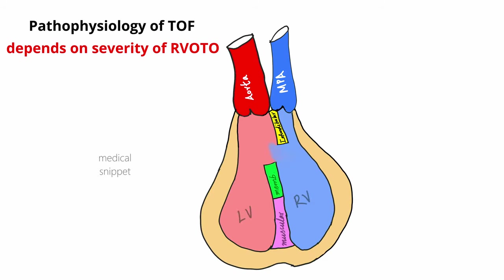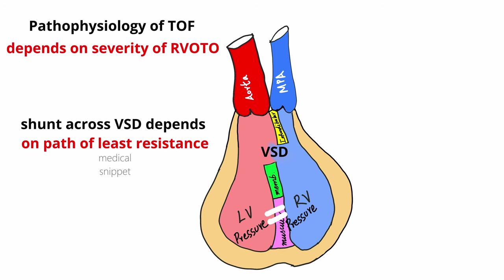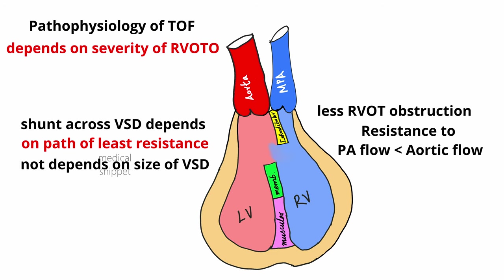The pathophysiological consequence of TOF is mainly due to the degree of RVOT obstruction. As the VSD is large and non-restrictive, right and left ventricular pressures are equal, so the direction of blood flow across the VSD depends on the path of least resistance and not on the size of the VSD. If the RVOT obstruction is less, the resistance to blood flow across the RVOT is less than systemic vascular resistance, so blood preferentially flows into the RVOT causing a predominantly left-to-right shunt. These patients don't develop cyanosis and form the pink TOF.